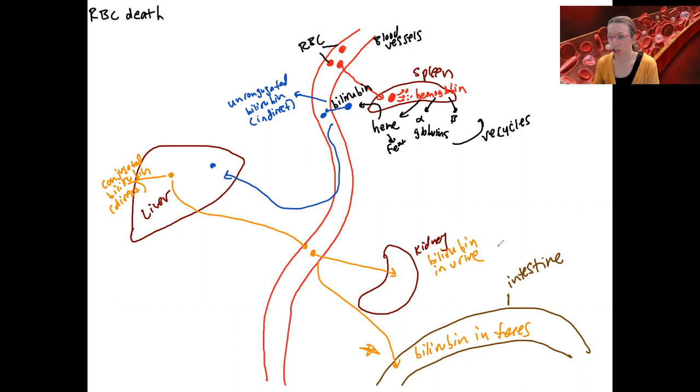The liver's job is to convert bilirubin into a form that can be excreted by the body. The spleen's job was to convert hemoglobin ultimately into bilirubin so that can be excreted by the body.